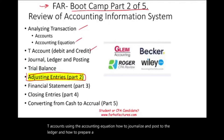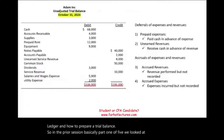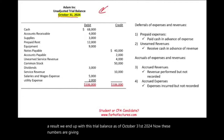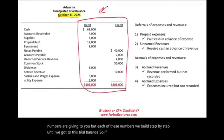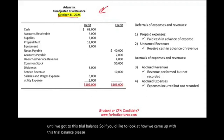In the prior session — basically part one of five — we looked at these steps and as a result we ended up with this trial balance as of October 31st, 2024. These numbers are given to you, but each of these numbers we built step by step until we got to this trial balance. If you'd like to see how we came up with it, please look at the prior section.